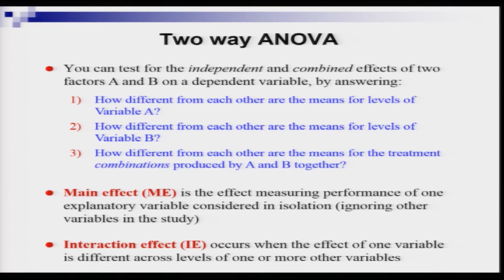To measure the interaction effect, we ask question three: how different from each other are the means of the response variable for different combinations produced by A and B together? The main effect is the effect of one explanatory variable considered in isolation — we ignore the other factor. The interaction effect occurs when the effect of one variable differs across the labels of one or more other variables; here both factors A and B have their labels changing simultaneously.